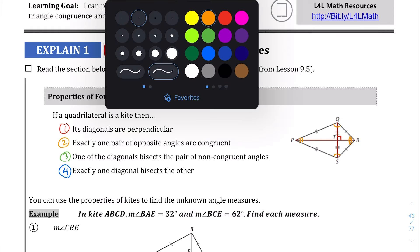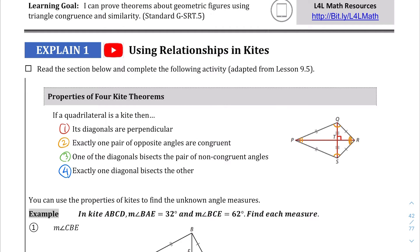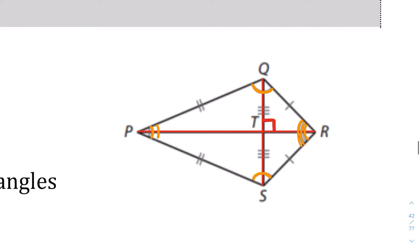The third part of this theorem says that one of the diagonals bisects the pair of non-congruent angles. So we're taking a look at this angle here — one of the diagonals is going to bisect these angles. It's not the case for this one. This is going to be different from this, but at least one of the diagonals bisects the angle.